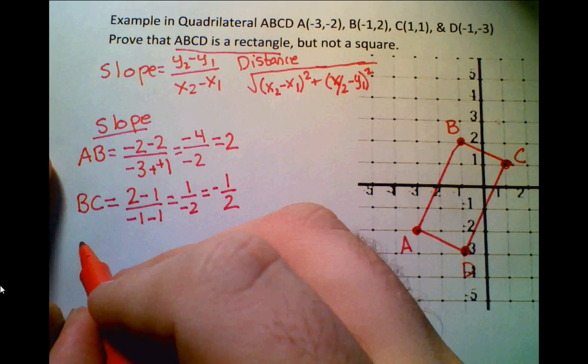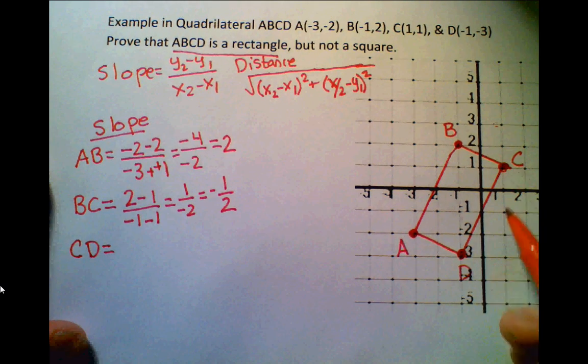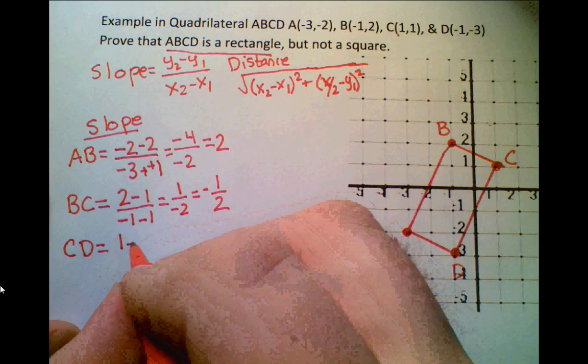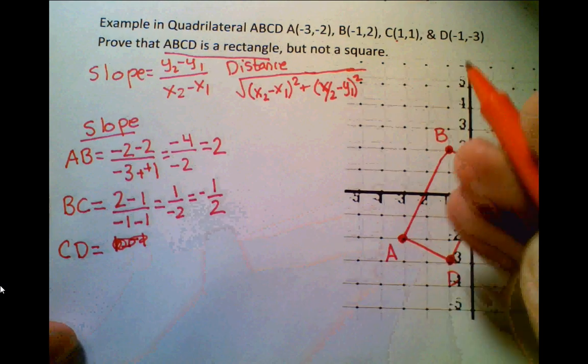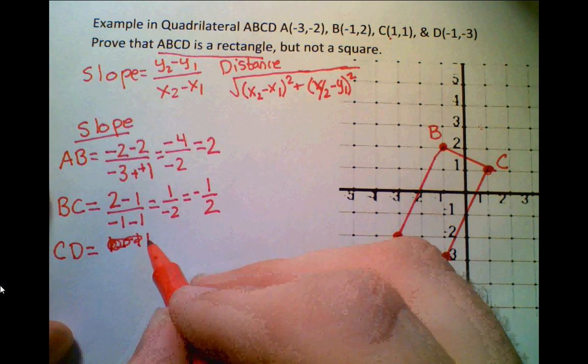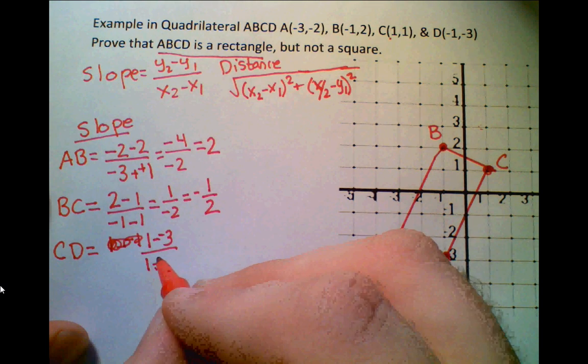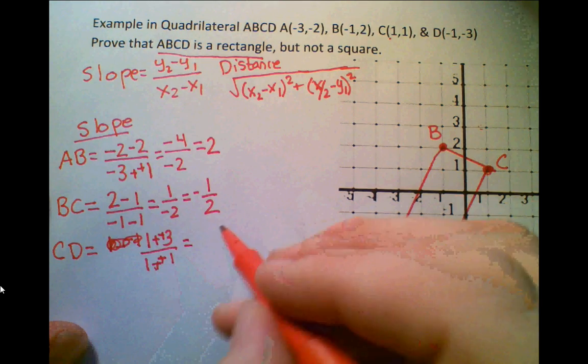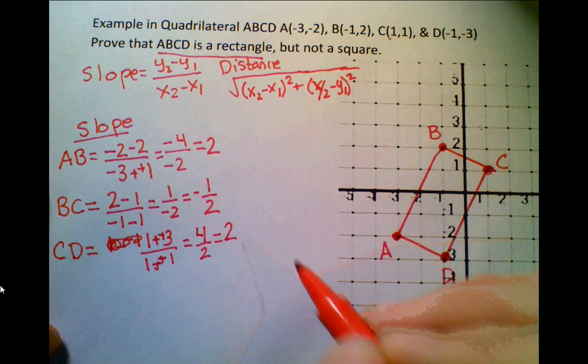So let's do CD. CD is going to be 1 minus -3, all over 1 minus -1. That's two negatives, so they become positive, and I end up getting 4 over 2, which is equal to 2.